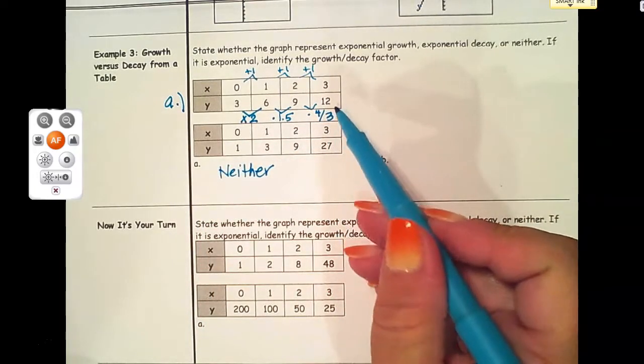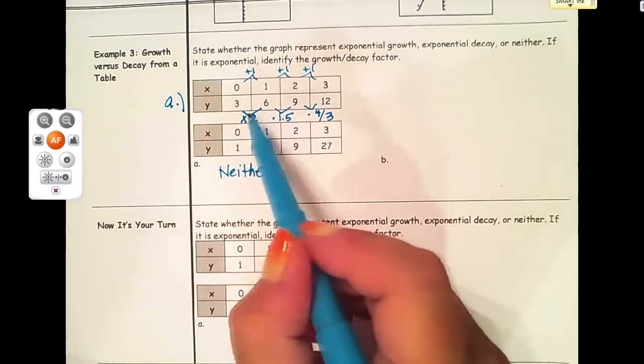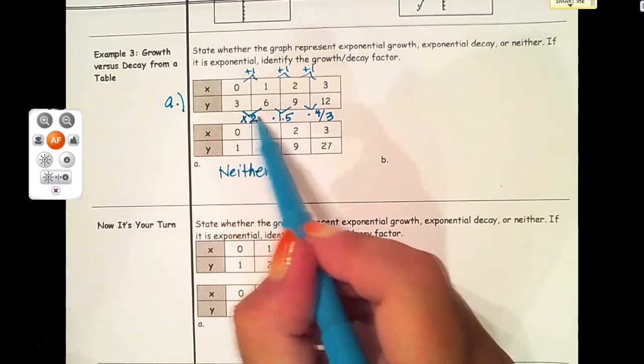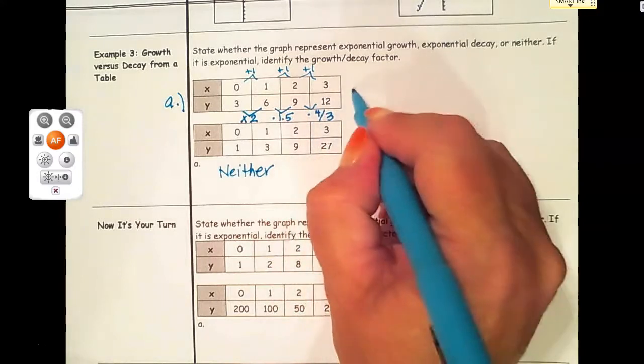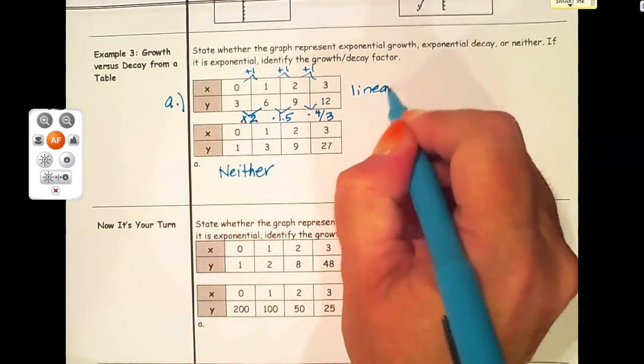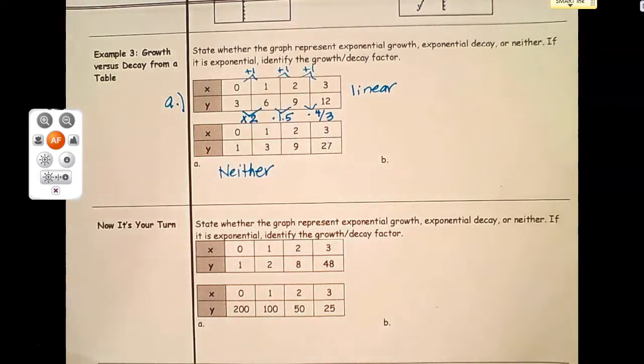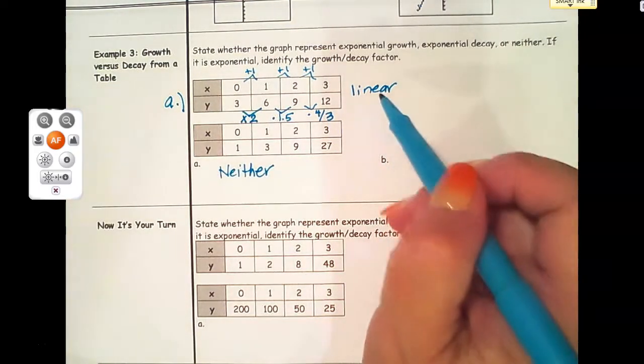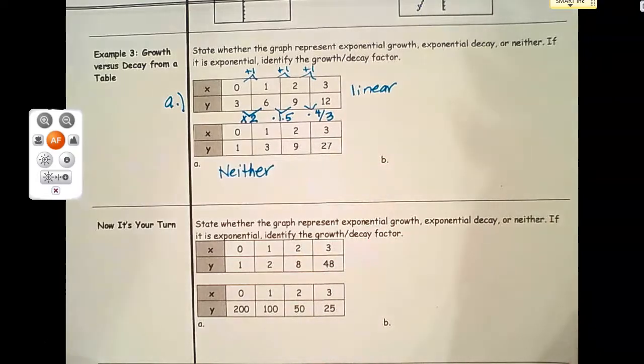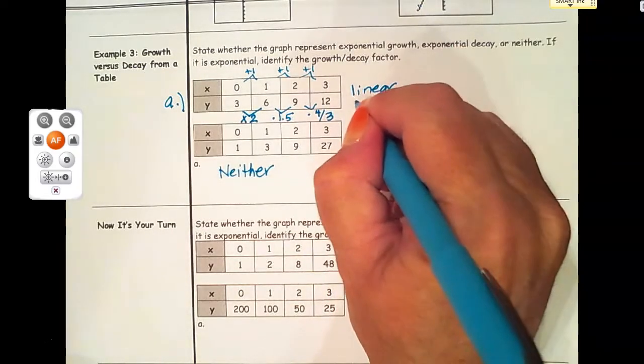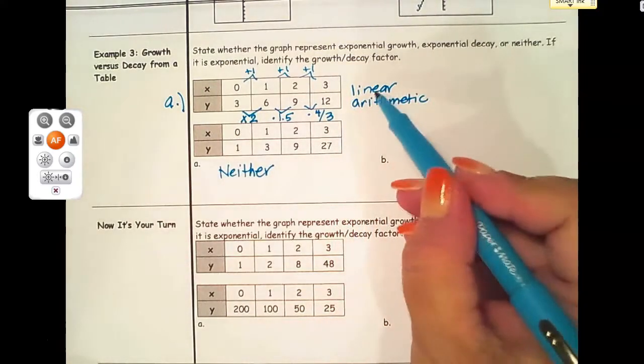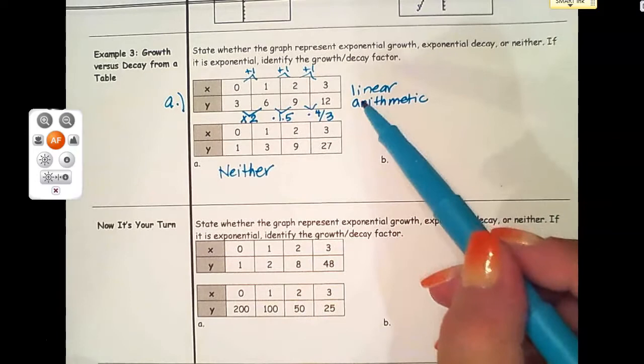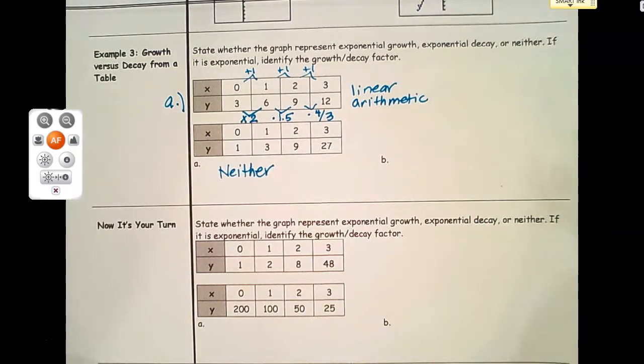This brings us to an important point. At the beginning of the year we were discussing patterns in these tables. You can see this is going plus three each time. Maybe you were predicting this would be linear, and if you were, you're correct. A linear equation will never be exponential. This goes along with our arithmetic sequences that we learned about, so those will not end up to be exponential.